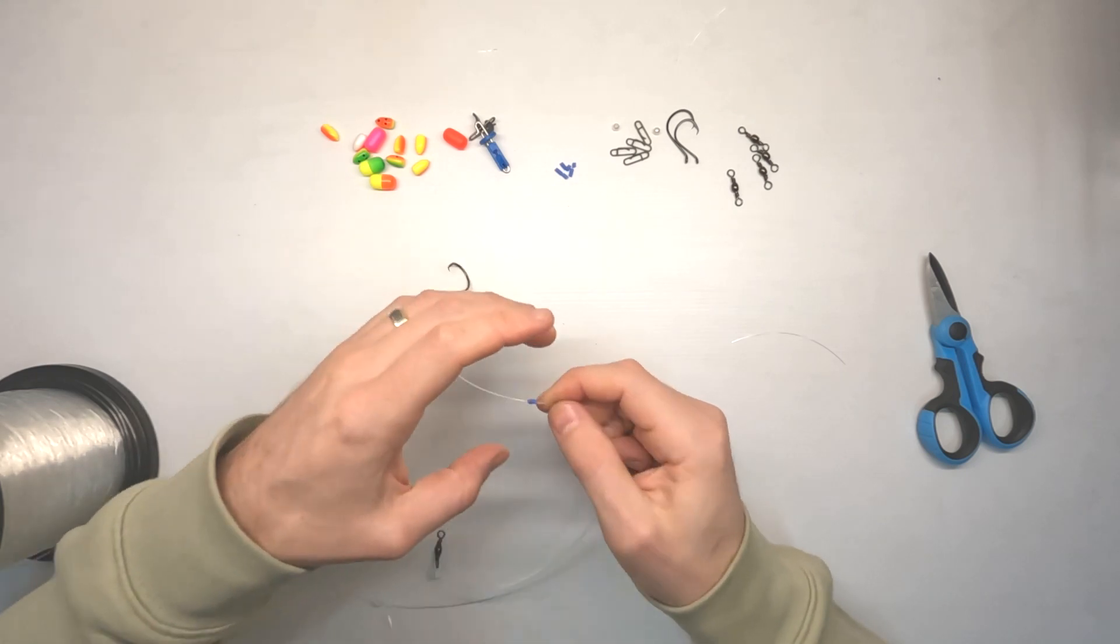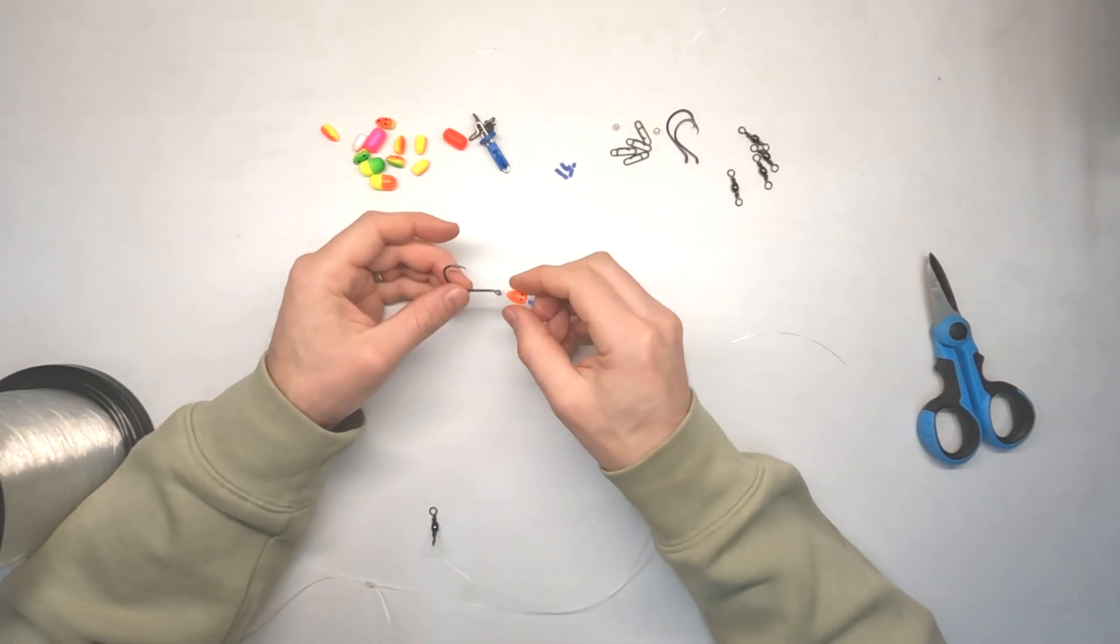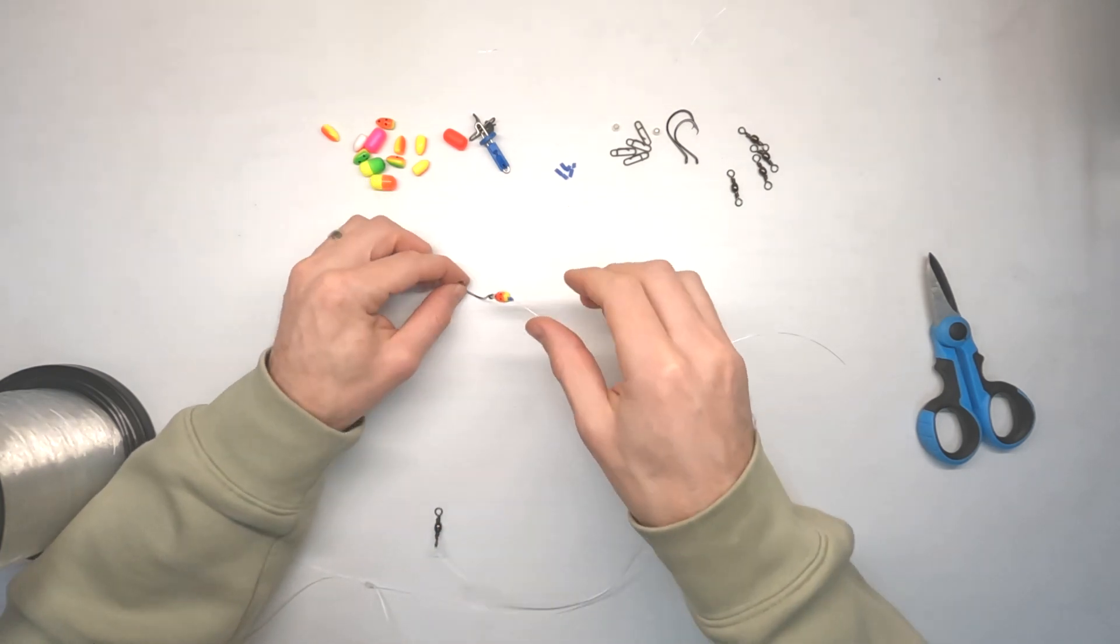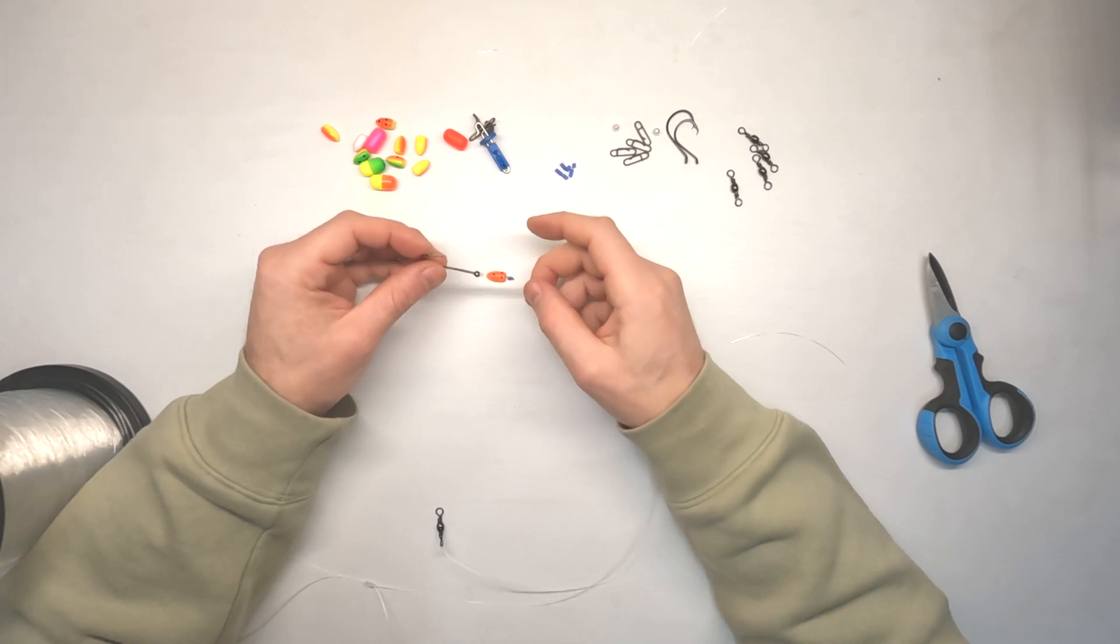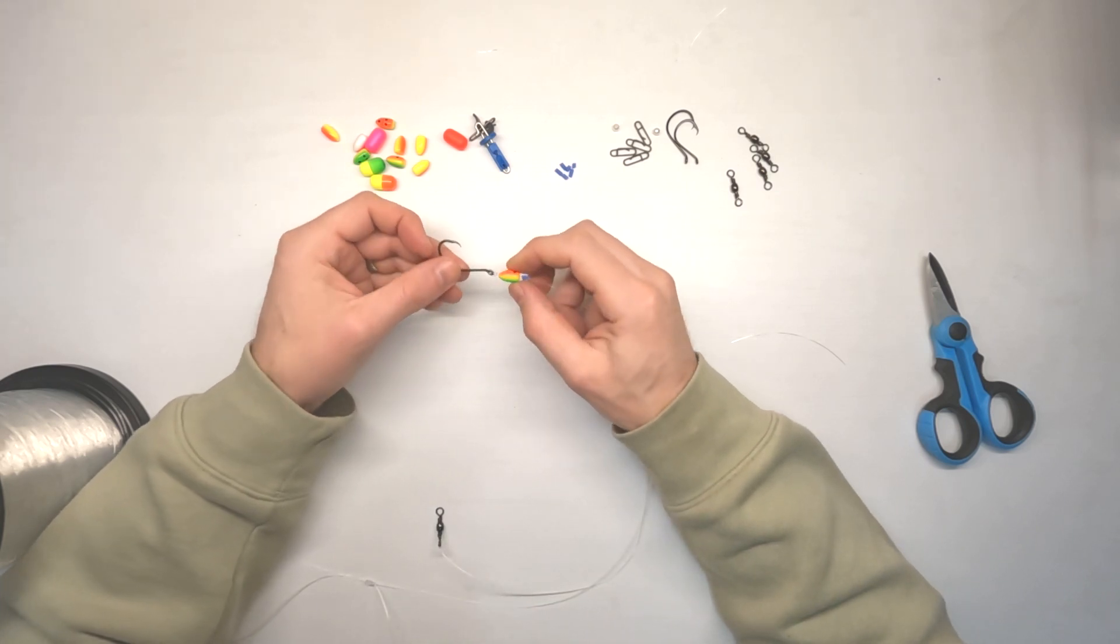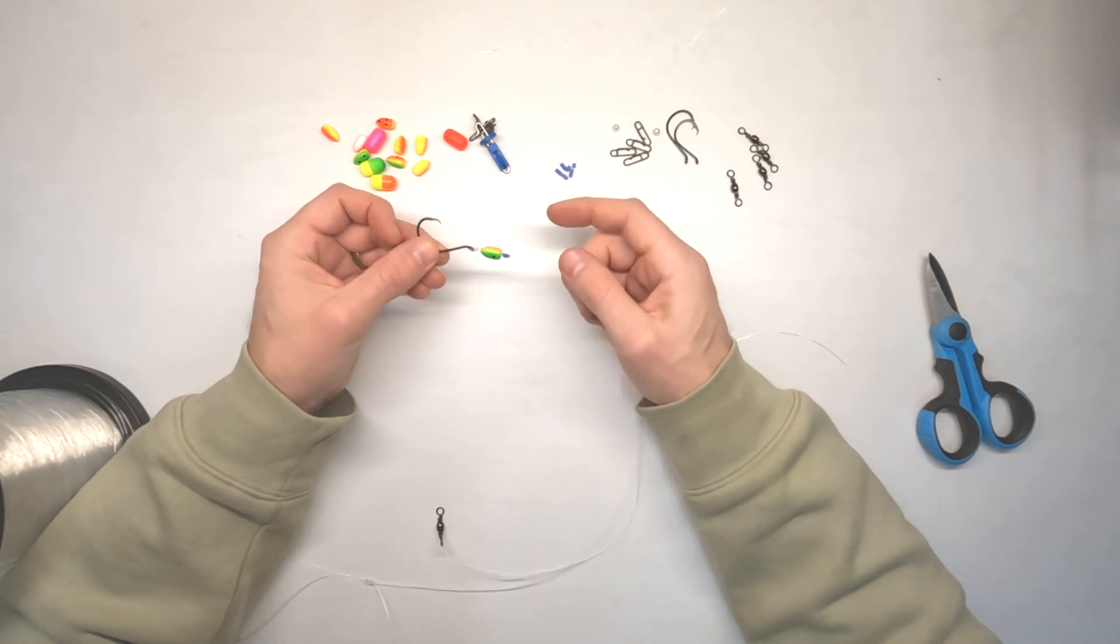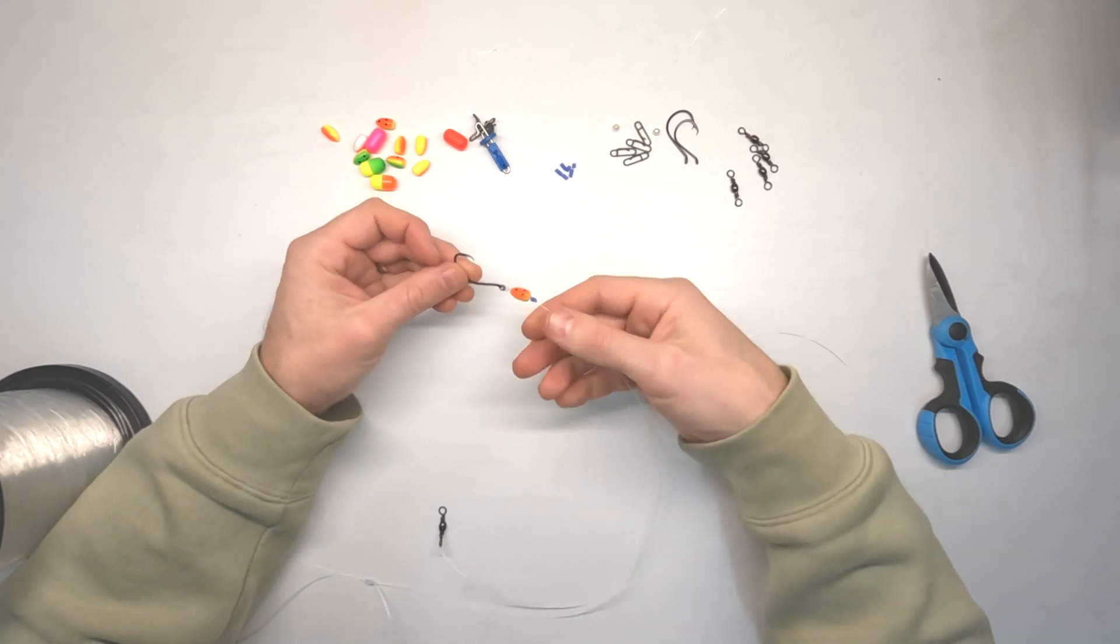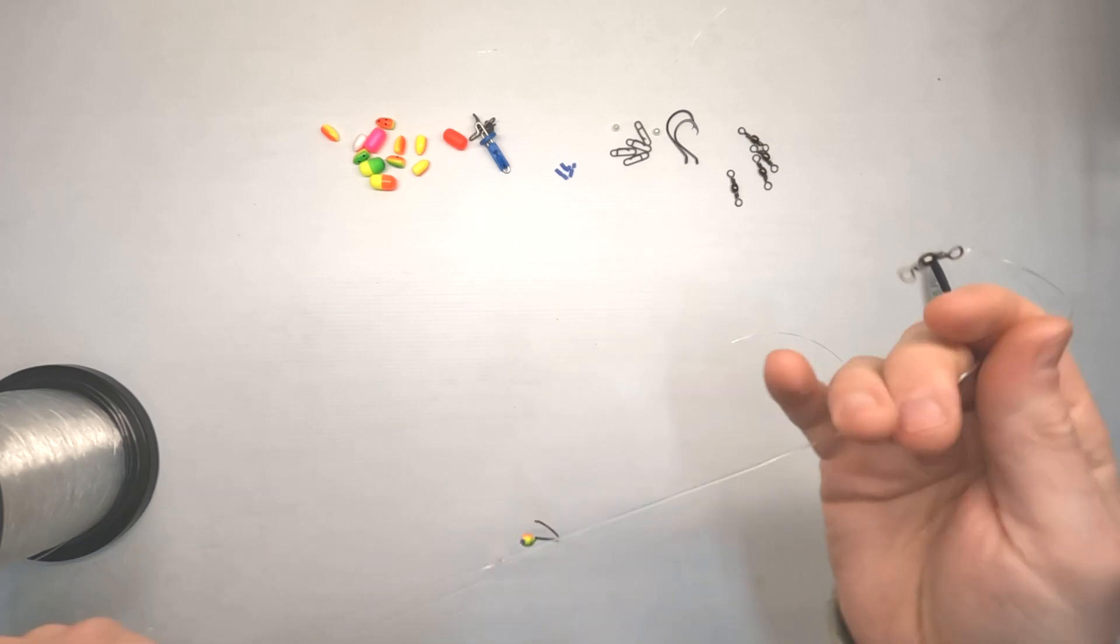Trim off your tag end. And then you can drop your float bead back down and then put that rubber stopper behind it, which is going to stop that float bead drifting all the way up here and your bait just sitting on the bottom, which sort of defeats the purpose of a float bead.